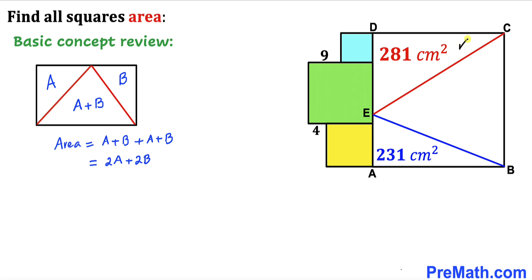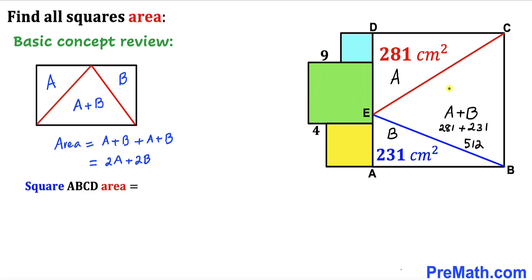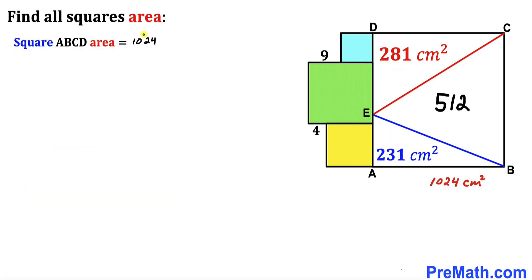Now let's focus on right triangle CDE. I'm going to call its area uppercase A, and the area of triangle BAE I'll call B. Then the area of the middle triangle is A plus B, which is 281 plus 231, giving us 512. Therefore the area of square ABCD is 281 plus 231 plus 512, which equals 1024 centimeter square.